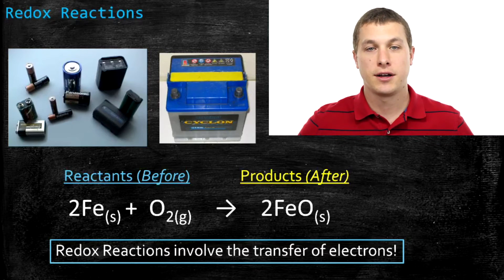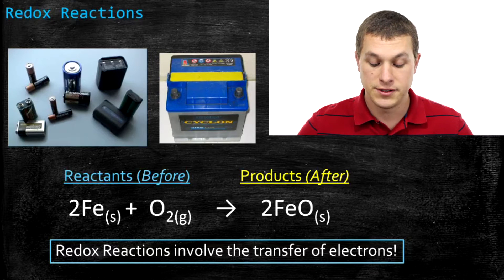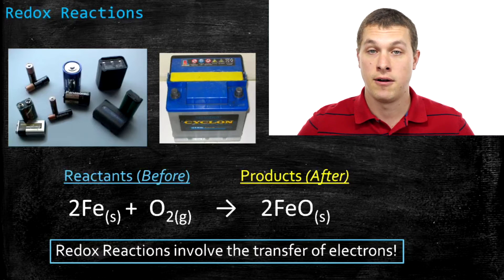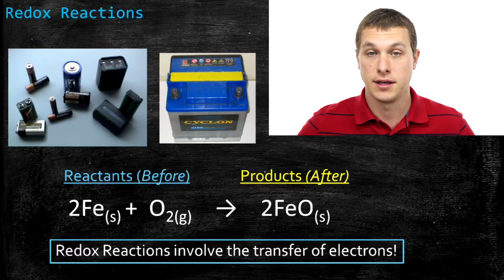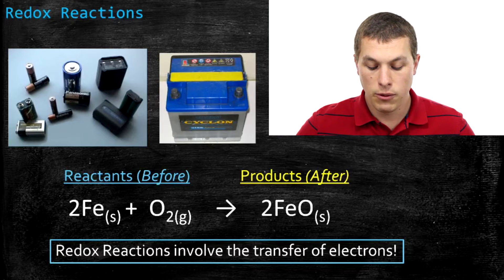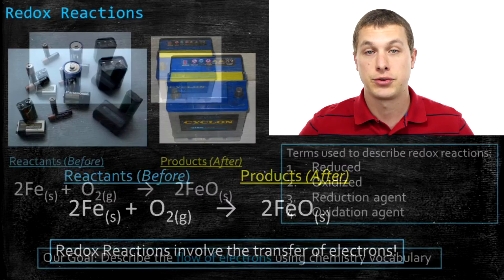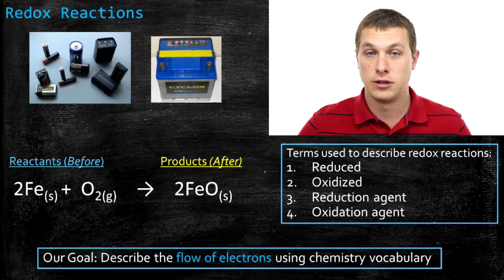Why is that? Redox reactions are really about the transfer of electrons. So in this reaction below, where you see iron combining with oxygen, there are actually electrons being transferred between oxygen and iron. Batteries can harness the transfer of electrons in reactions like this to create a current and run our everyday devices. What we're going to do in this video is use chemistry terms to describe the transfer of electrons in these reactions, and that's part of the challenging part of redox reactions — getting a handle on all the different terms we use to describe the flow of electrons.